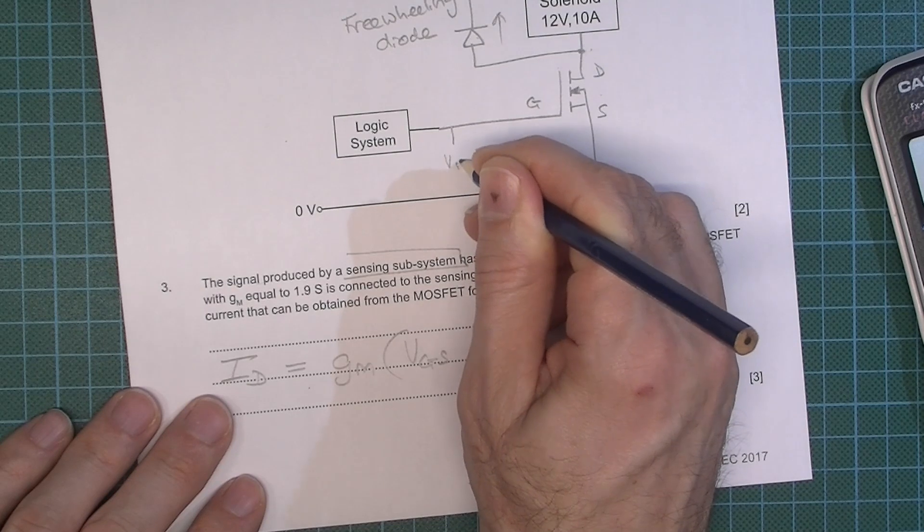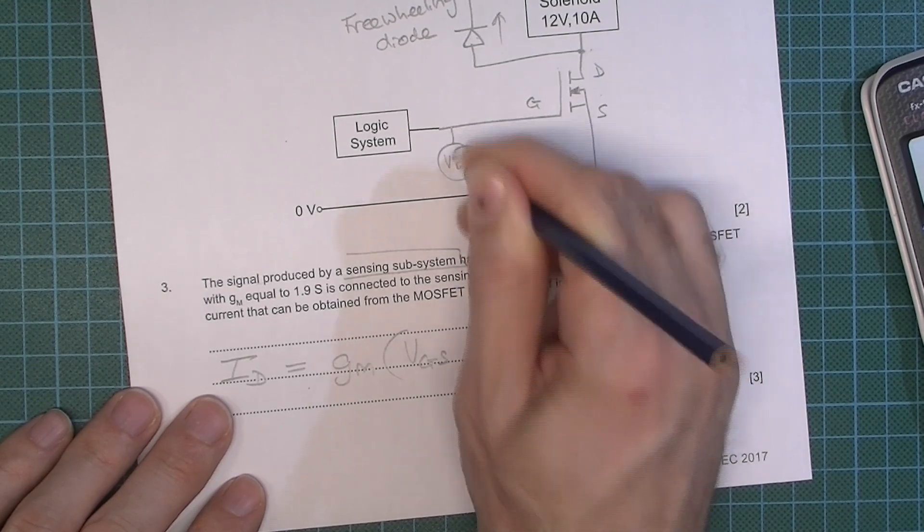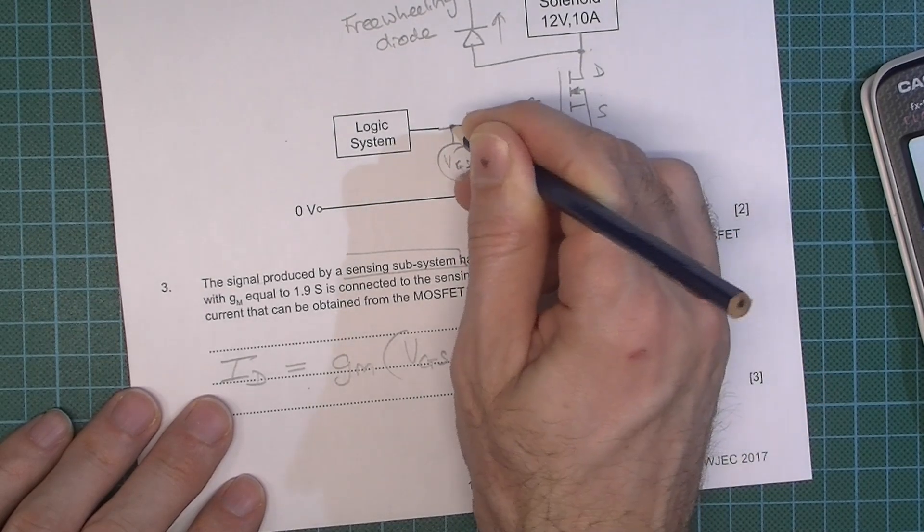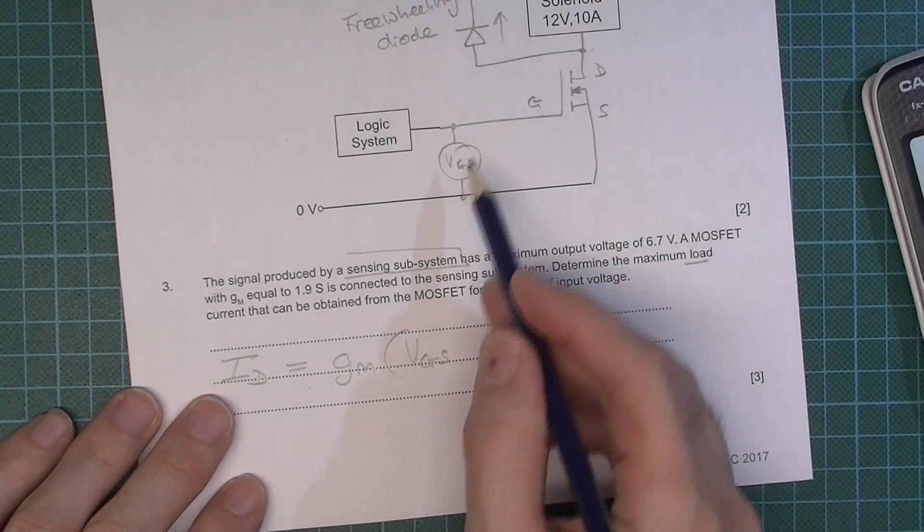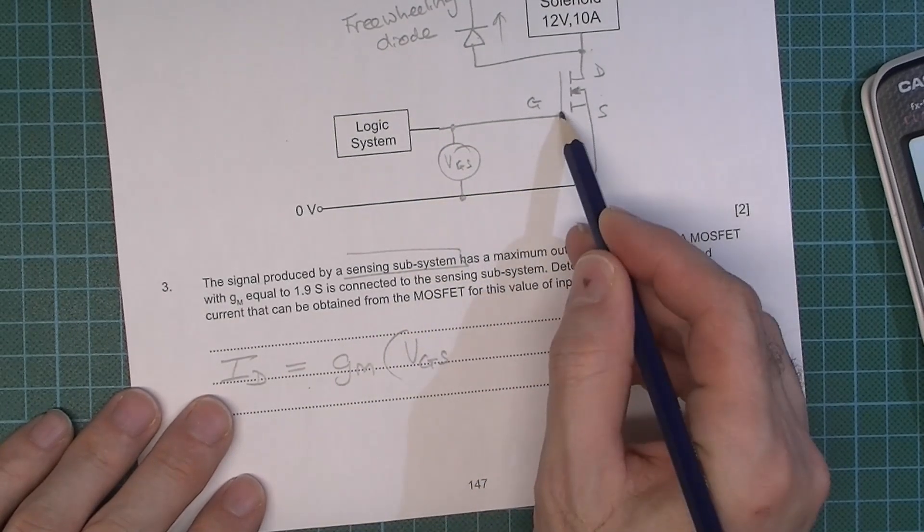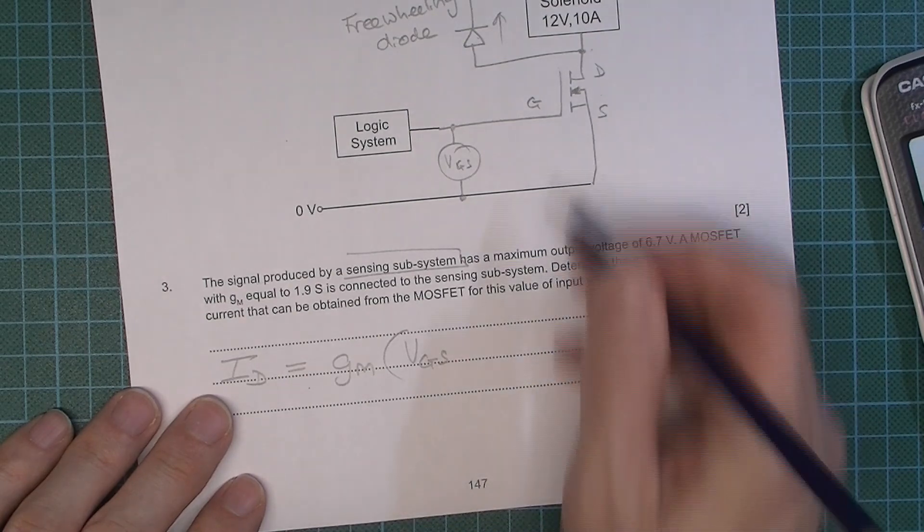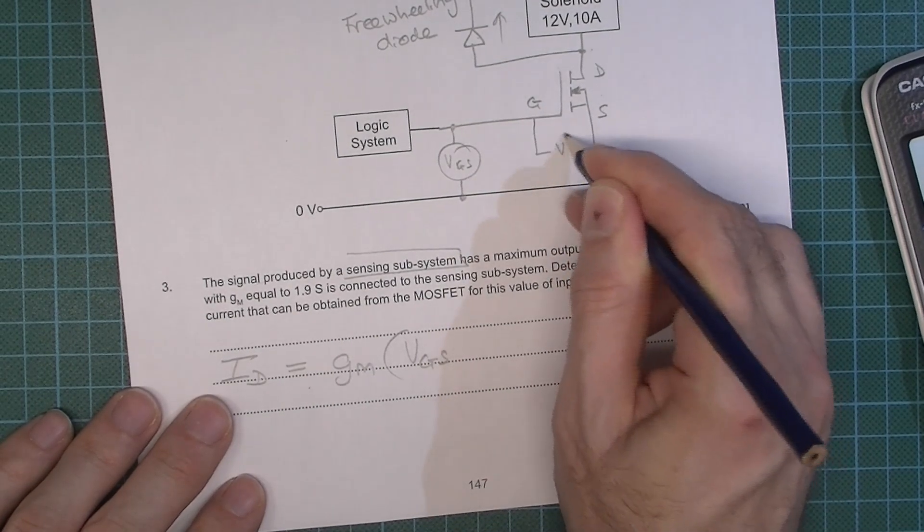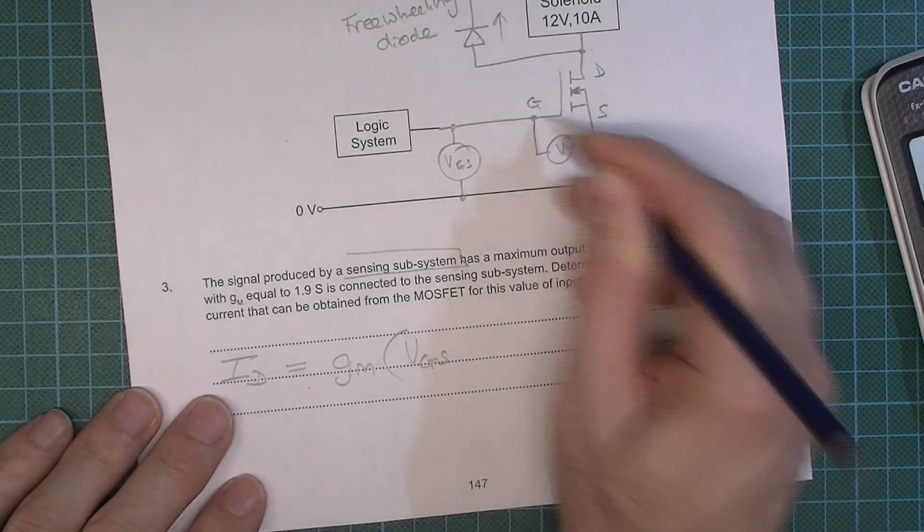This VGS. If we stuck a voltmeter in there we would be measuring the voltage between the gate and source because you know gate and source is there. I mean you could just as well put a voltmeter there. But it's the same thing. Hopefully you can see that.